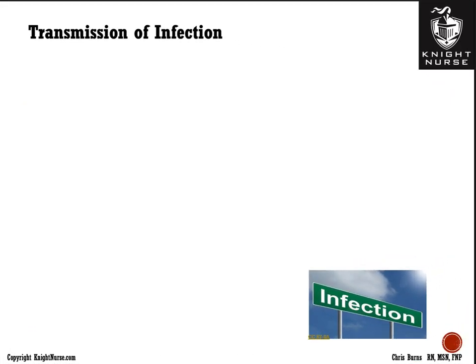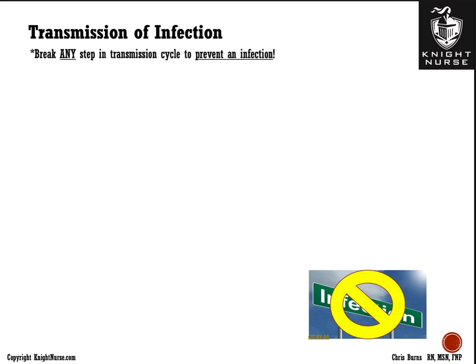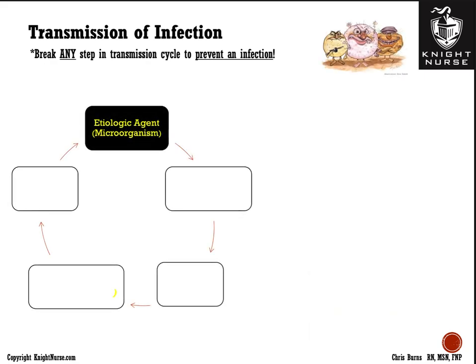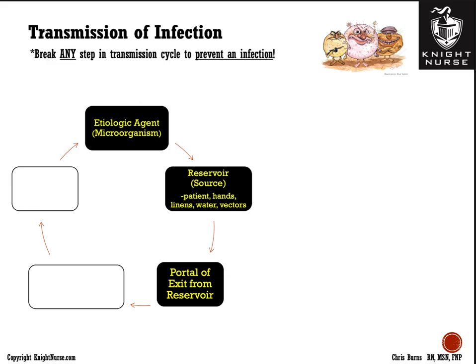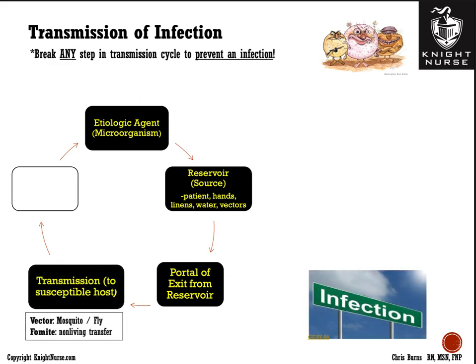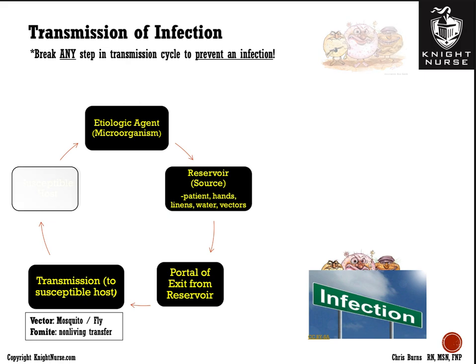Breaking any step in the transmission cycle can prevent infection. The cycle involves a microorganism residing in a reservoir or source — such as a patient's hands, linens, or vectors — exiting that source, and being transmitted to a susceptible host either through a vector like a mosquito, or a non-living fomite such as a stethoscope or unwashed hands. This is why focusing on each step of infection control is critical.